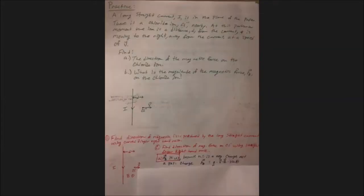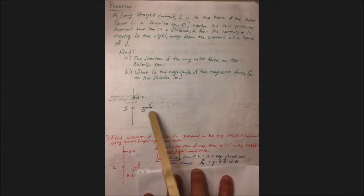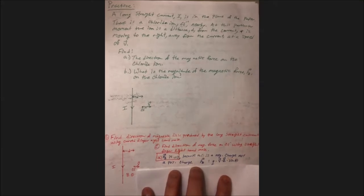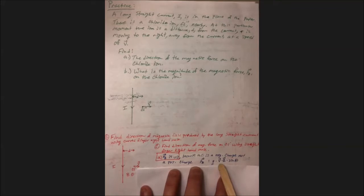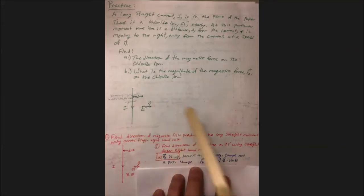Now let's look at letter B — the magnitude of the magnetic force. We use the force equation for magnetic force on a charge: QVB sine theta. The charge Q comes from the minus 1 charge on the chloride ion; it has an extra electron, so we use the elementary charge E for the charge magnitude. Then we just have V as a variable. The magnetic field B acting on the chloride ion comes from the long straight wire, so we substitute in the equation for the magnetic field caused by a long straight wire.